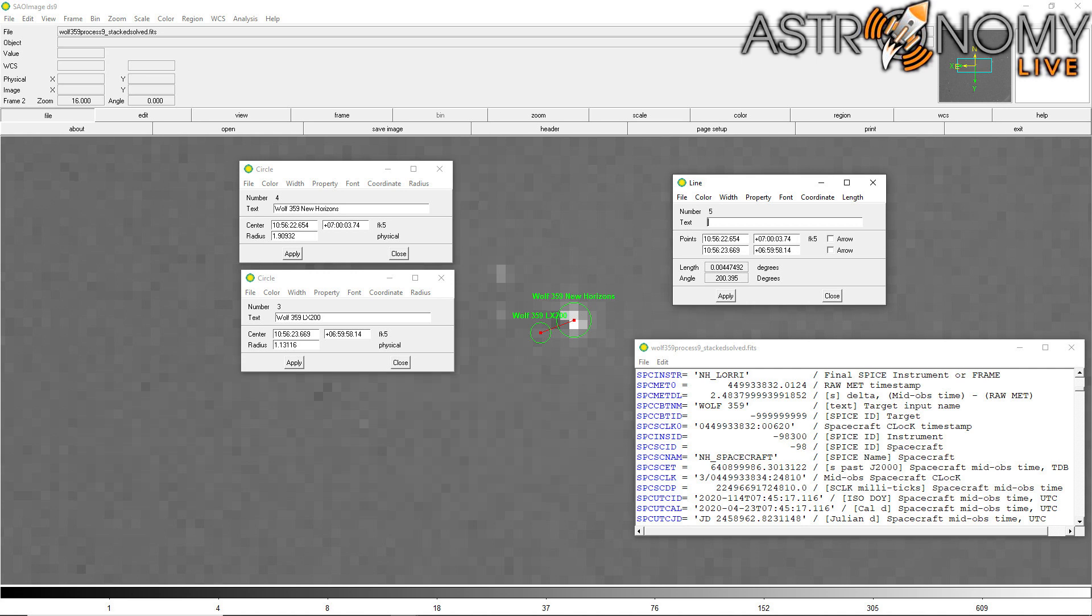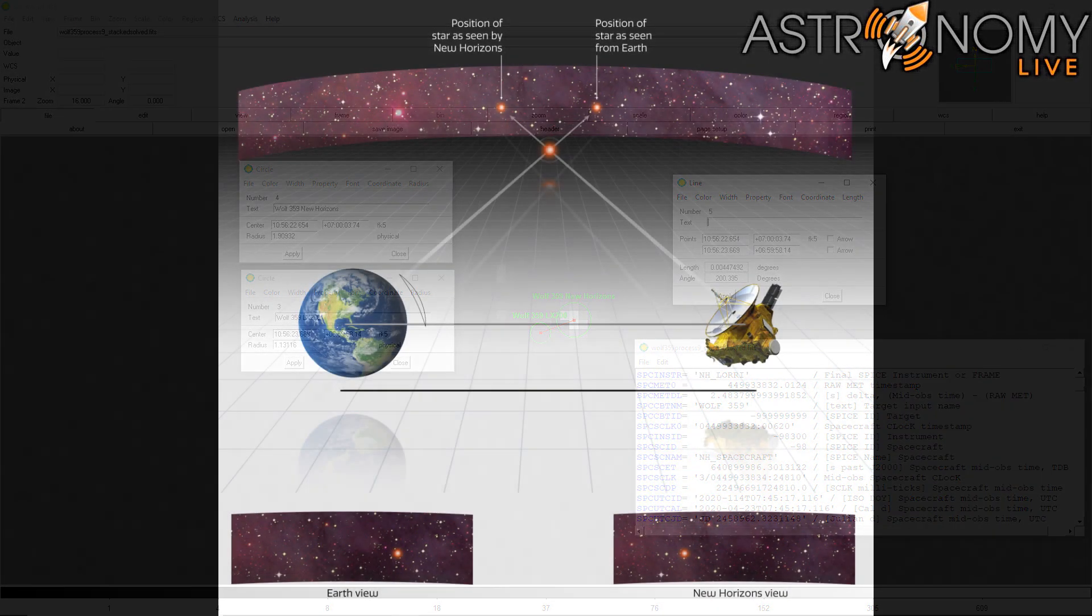It's worth noting here that the LORI instrument on New Horizons actually took a sequence of three images in rapid succession over about 15 seconds of time. I did a minimum stack of these three images using a custom program I wrote to take the minimum pixel value from all three images to create the final stack. This eliminates cosmic ray strikes from the image and cleans up the noise.